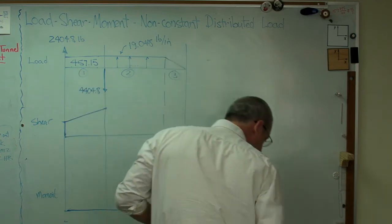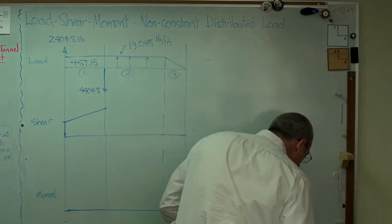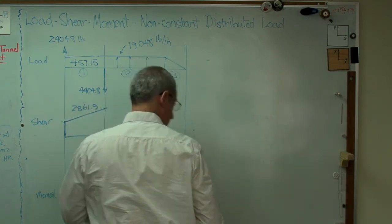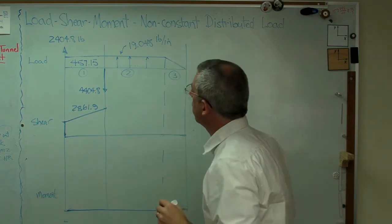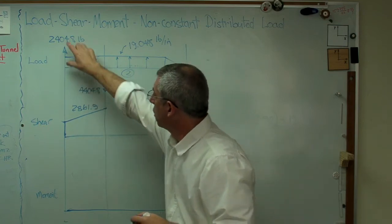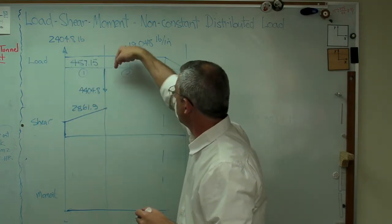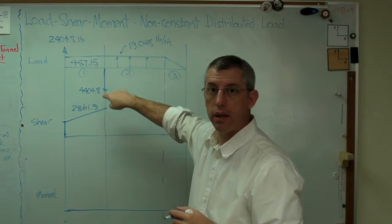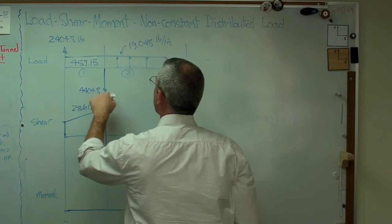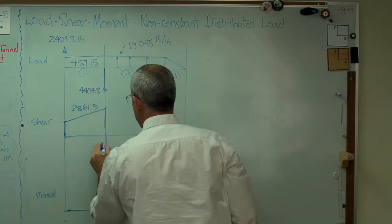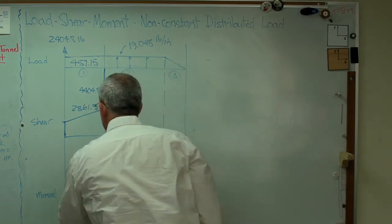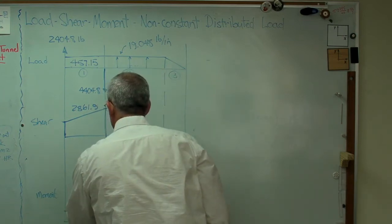Okay. So I'm up to here. And that height right there is 2861.9. That many pounds of shear force have accumulated from here to here, including that. And now I'm going to go down 404.8 down here. So I'm going to just account for that load. That's a discontinuous change. So I'm going to go down to there. And that turns out to be minus 1542.8.